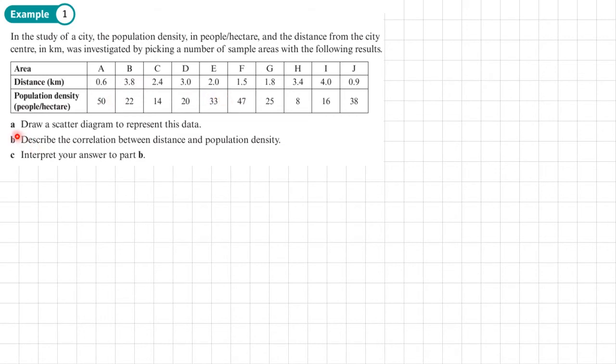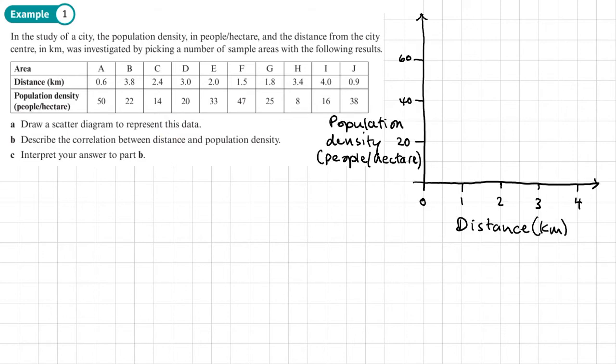So let's look at the question. Okay, so here's my axes. Don't forget to label them as well. Now we're going to plot these points. So there's all of our points plotted in part A.